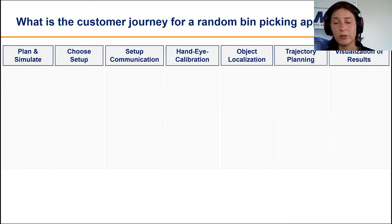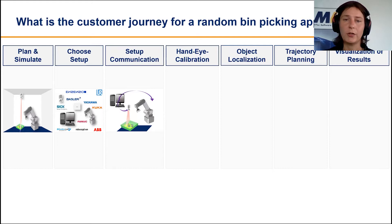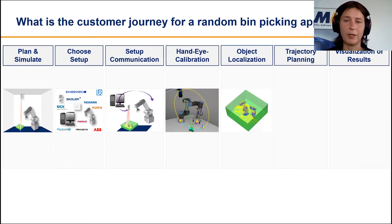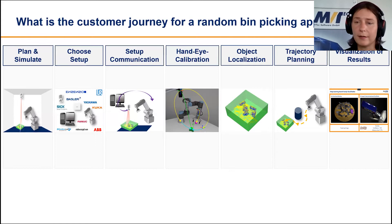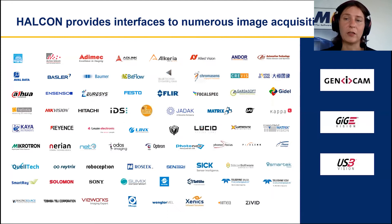For random bin picking, what is the customer journey? It always starts with planning and simulation — the better you simulate the cell, the more cost-effective the realization will be. Then you choose the setup, configure communication, calibrate the sensor and camera to the robot, perform object localization, collision avoidance, and trajectory planning, and finally visualize the results. Halcon covers the middle part: communication, hand-eye calibration, and object localization.